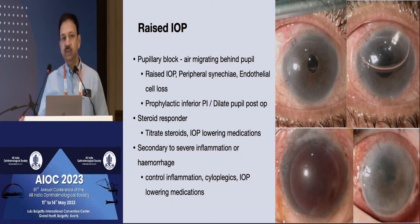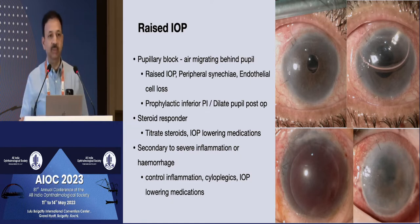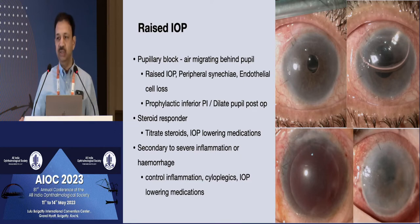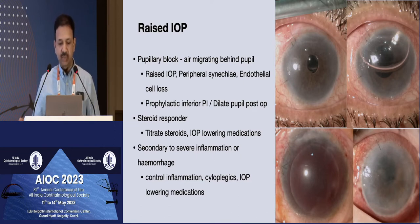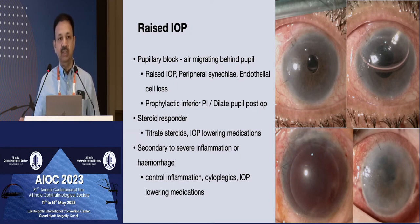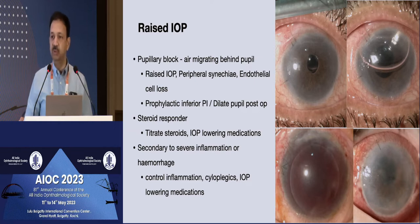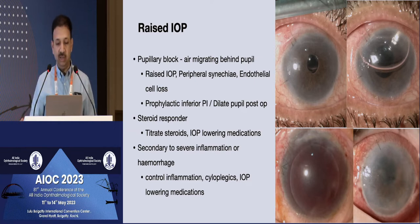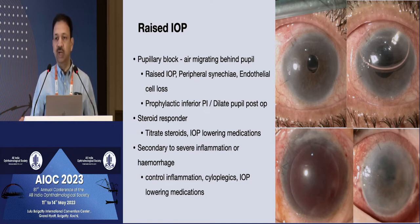To prevent that, you can perform a prophylactic inferior peripheral iridotomy during surgery or dilate the pupil post-operatively. If not treated, it can also result in what is referred to as the Urrets-Zavalia syndrome, where you can have a fixed dilated pupil, and in a phakic eye you can develop lens opacities as well. Once you see this, you have to remove that air bubble and reform the anterior chamber.